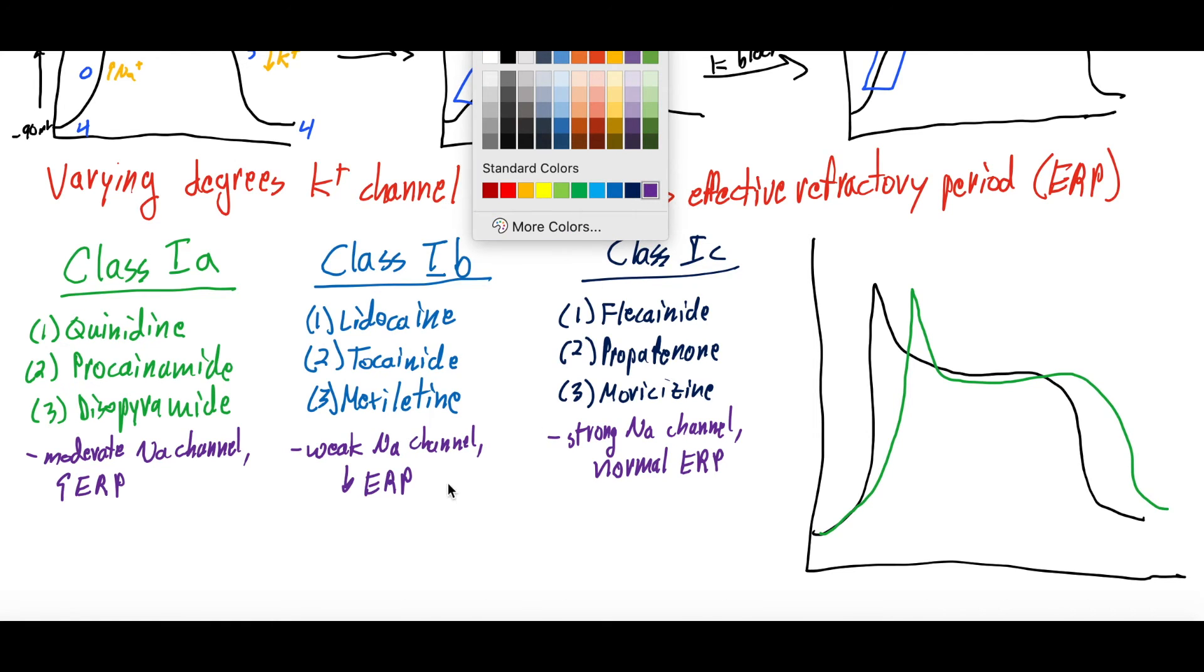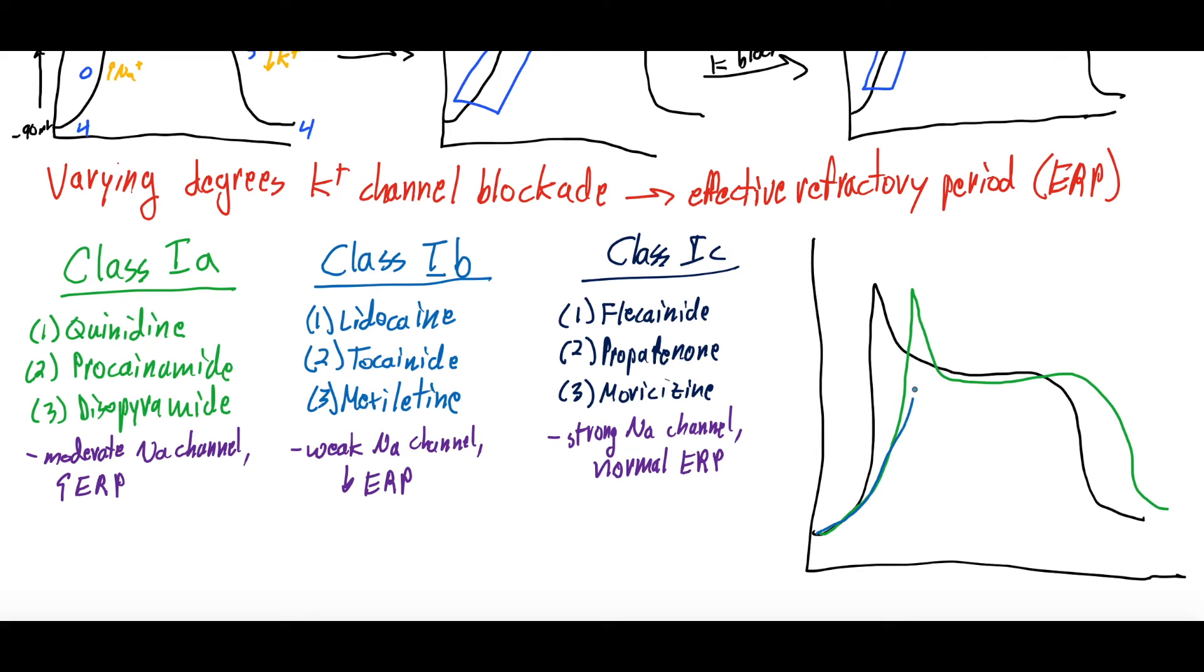Class 1B, we said, is a weak sodium channel blocker, and it actually decreases the effective refractory period. So we'll have this one, and then we're going to have a decreased effective refractory period where it's shorter.